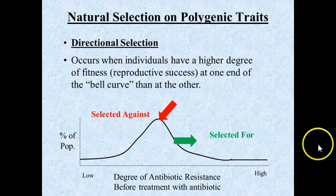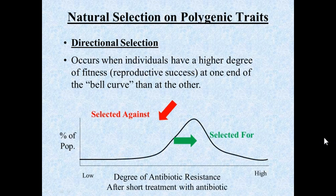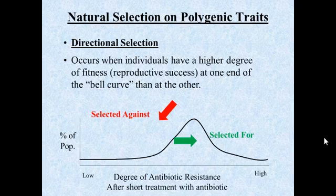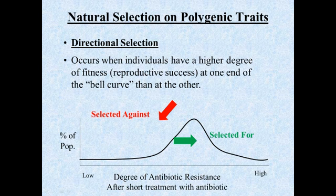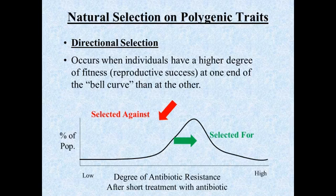If we expose that population to a small amount of antibiotics, you have individuals at the upper end that are selected for — meaning they have an advantage in reproducing — and individuals at the lower end that are selected against, meaning they have a disadvantage in surviving and reproducing. The effect over time is that the bell-shaped curve shifts to the right. The new average shifts because those with lower antibiotic resistance don't reproduce, while those with higher resistance can reproduce just fine and have an advantage.